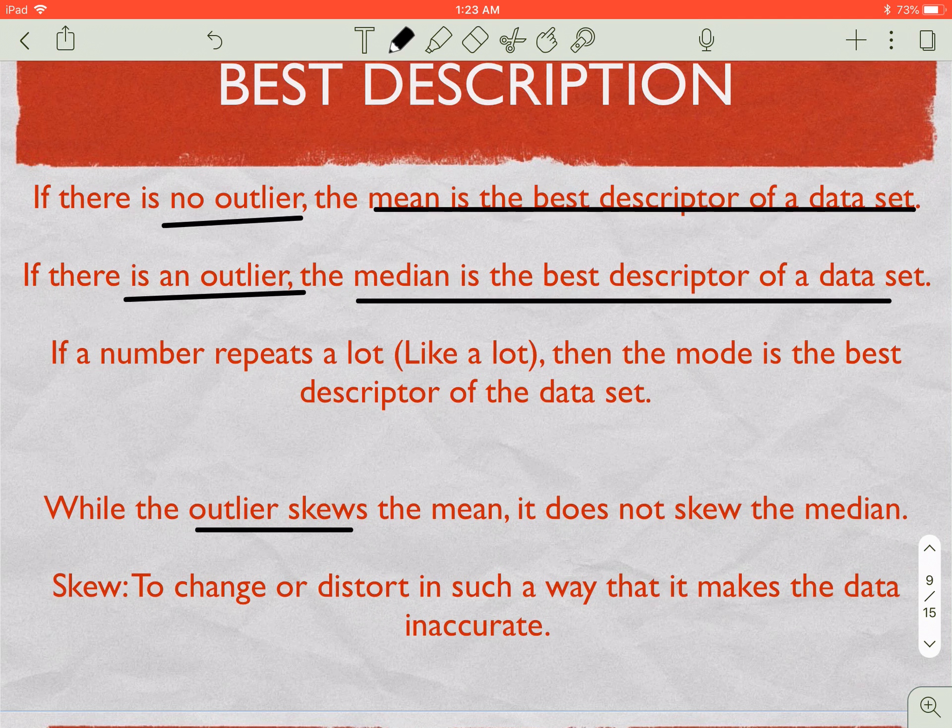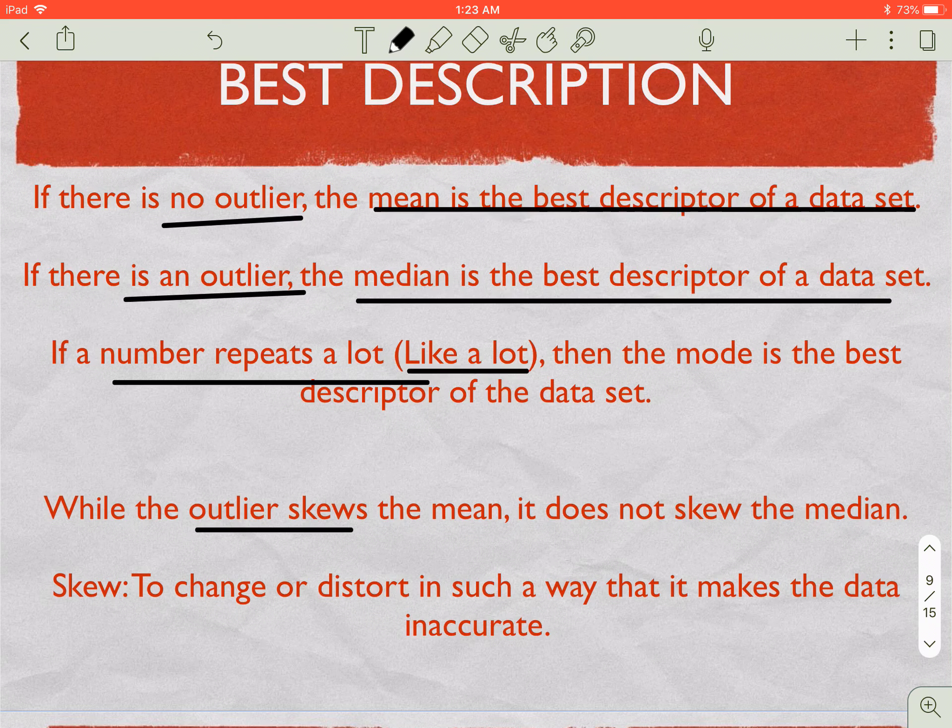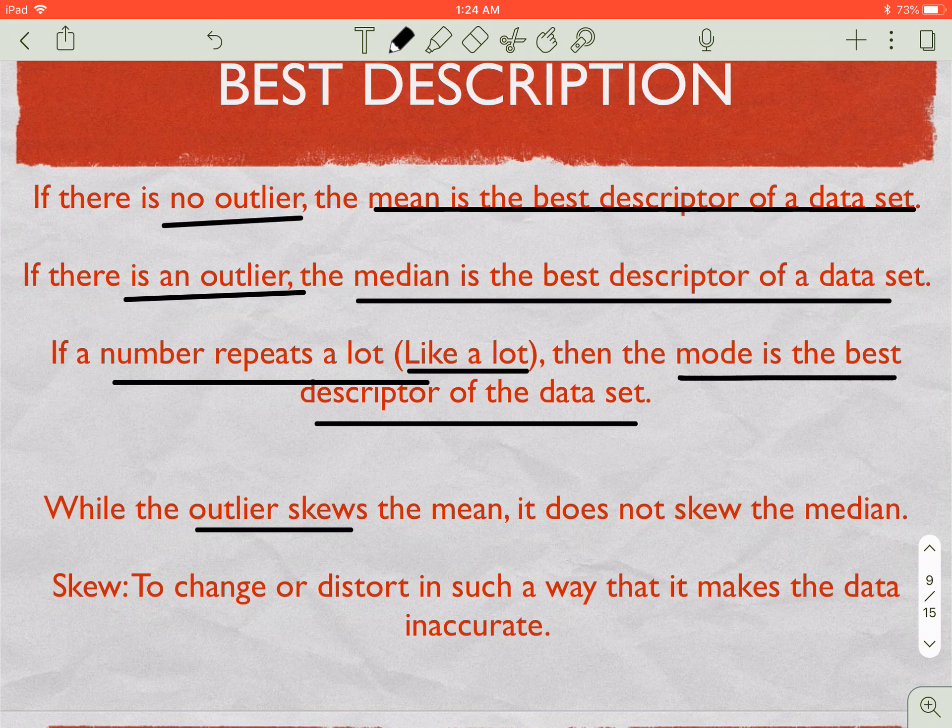So if we have an outlier, it messes with the median. And if a number repeats a lot, like a lot, not just once or twice but a lot, we can say the mode is the best descriptor of the data set. So to reiterate, if we have an outlier, we don't want to use the mean because just like in Austinville, that outlier does not give us the full picture when we find the mean. If there's an outlier, we want to use the median. And if a number repeats a lot, we want to use the mode.